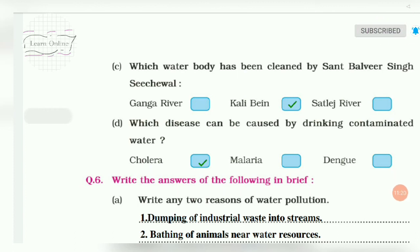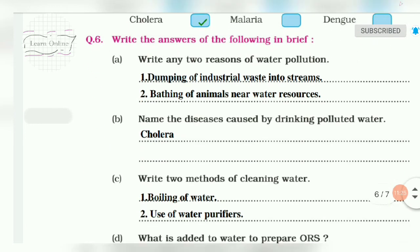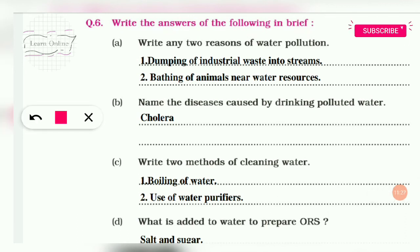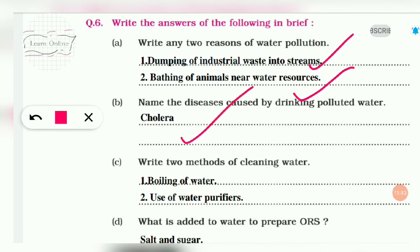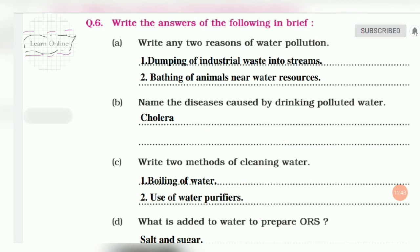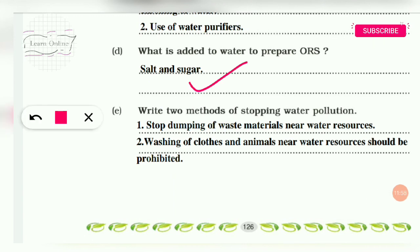Which disease is caused by drinking contaminated water? Answer: Cholera. Write any two reasons for water pollution: industrial waste dumping and washing animals near water resources. Name a disease caused by drinking polluted water: Cholera. Two methods to clean water: water filter and RO purifier. What is added to water to prepare ORS? Salt and sugar.